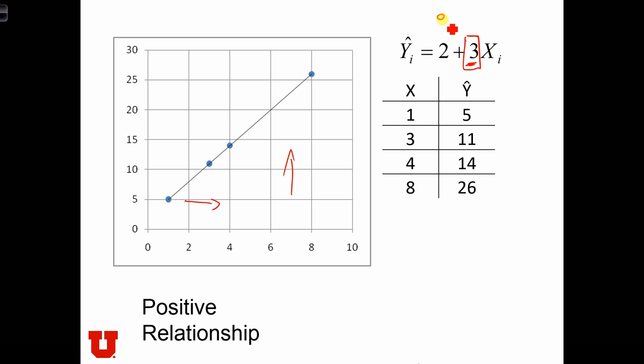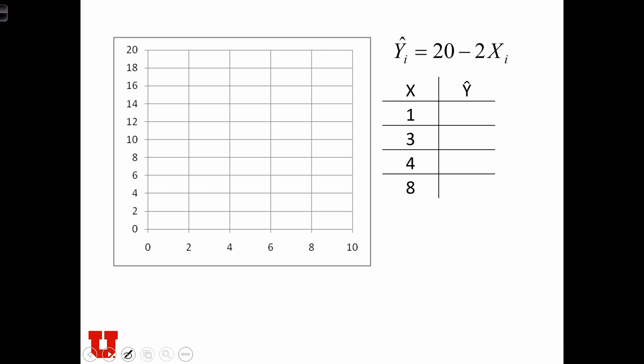Remember, this a here is 2, and the b is 3. Let's do another example, this time with this equation, y hat equals 20 minus 2x. So if x equals 1, we have 20 minus 2, 18.